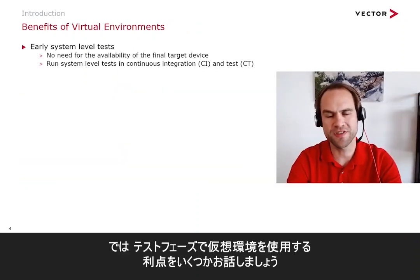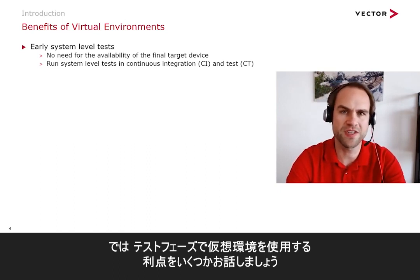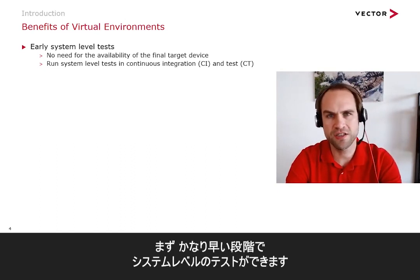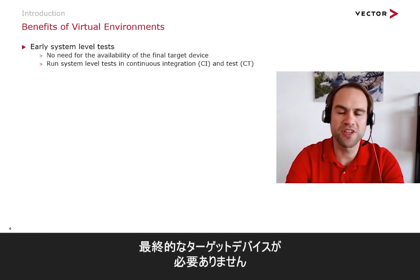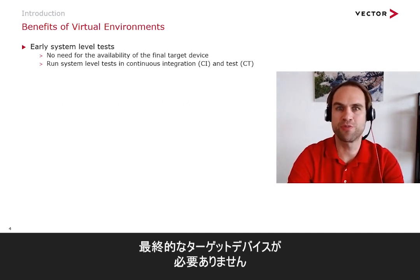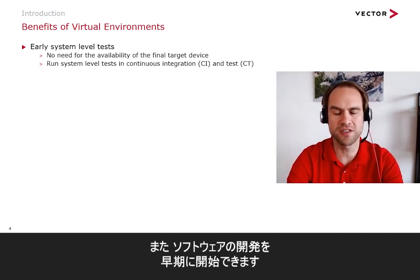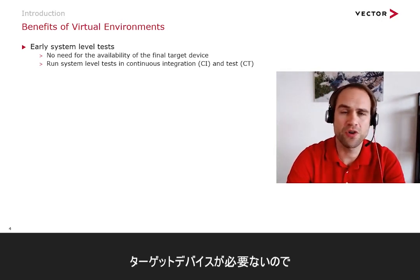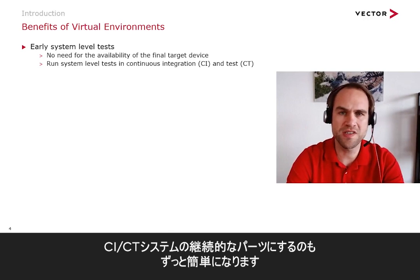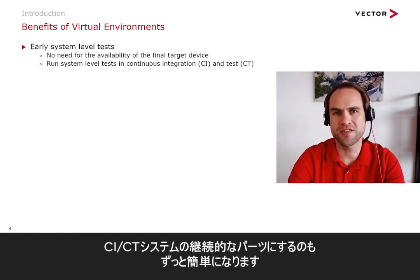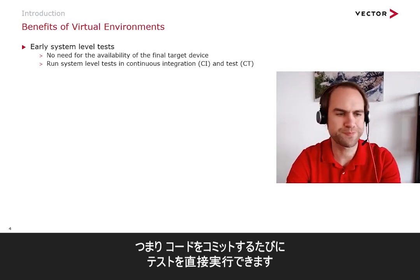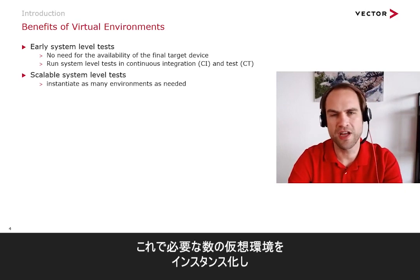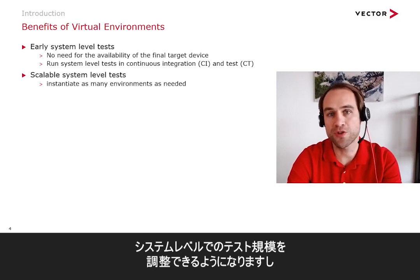Let me now highlight some of the benefits of employing virtual environments in your test phases. You now have the ability to test much earlier at the system level — you don't need the final target device to have been produced yet. And since you're no longer needing the target device, it is also much easier to make it a continuous part of your CI/CT system, meaning you can run tests directly whenever you commit some piece of code. You now have the ability to scale your system level tests because you can easily instantiate as many virtual environments as you need.